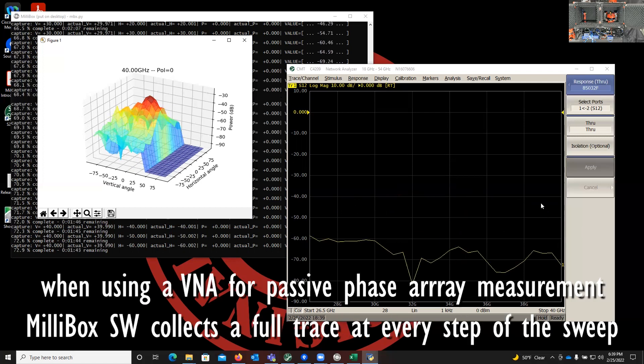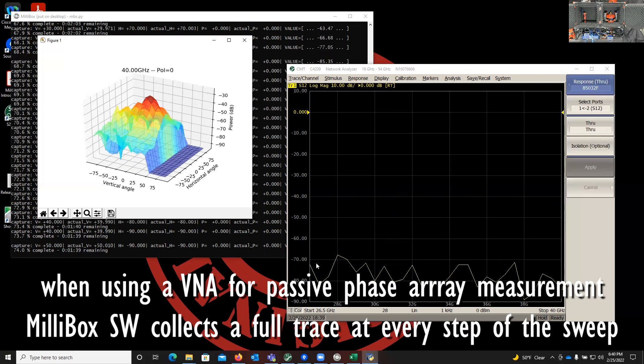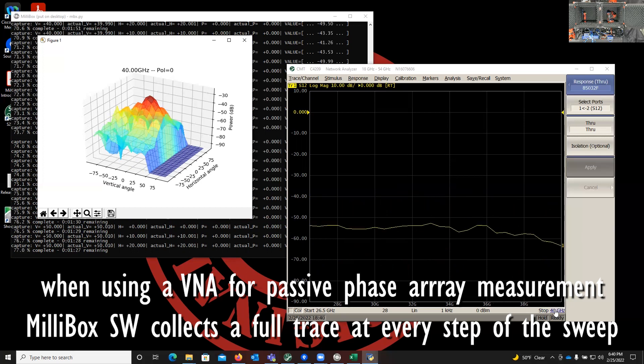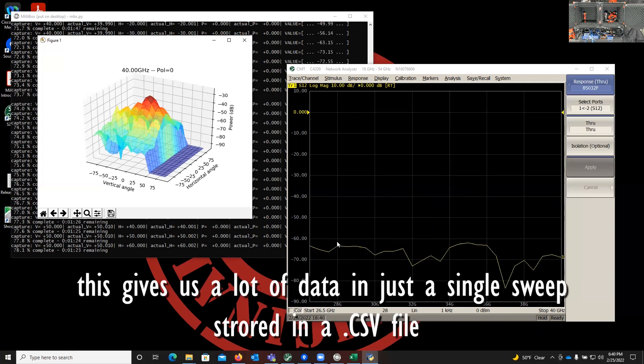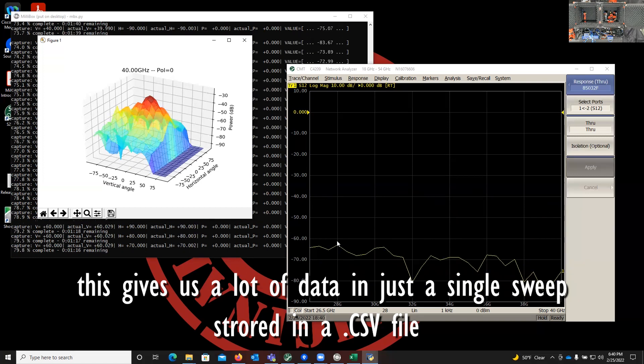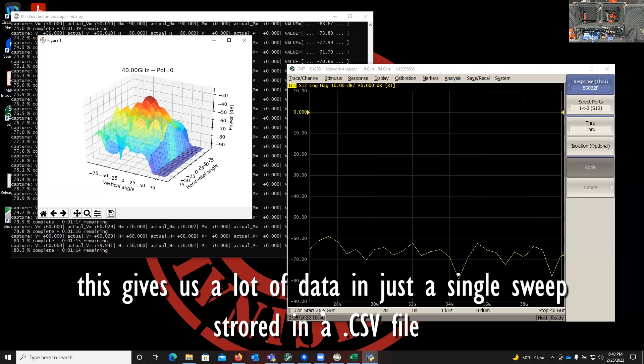With the VNA, there is a lot of advantage for passive antennas, where we not only collect a single point for the radiation pattern, we are collecting the entire trace. So in our case here, we are starting at 26.5, we're stopping at 40 gigahertz, and we're doing acquisition every 500 megahertz. So that gives us a lot of data points for a single sweep. So that's pretty powerful.